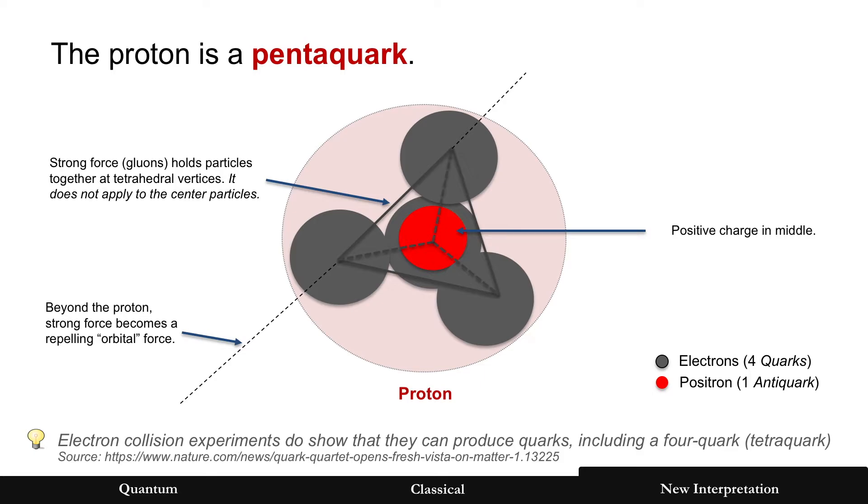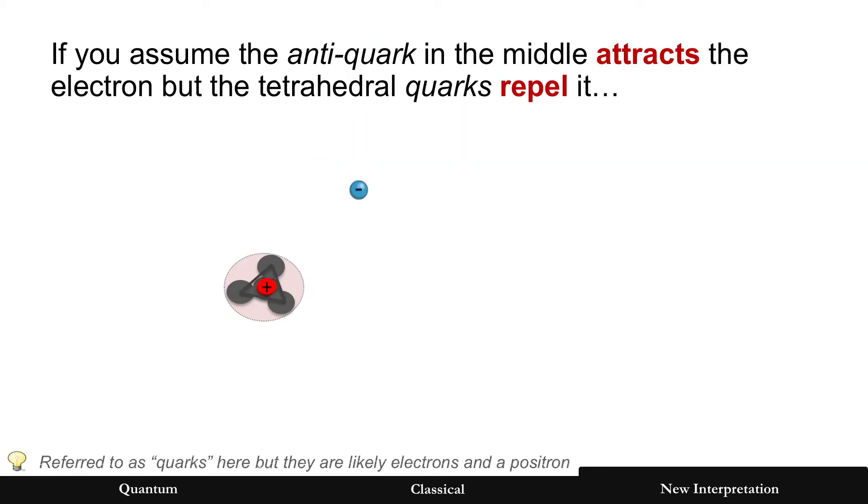But it is worth noting that electron collision experiments do show that electrons can produce quarks. All right, again, just for the purpose of this video, we're going to call them quarks and antiquarks.